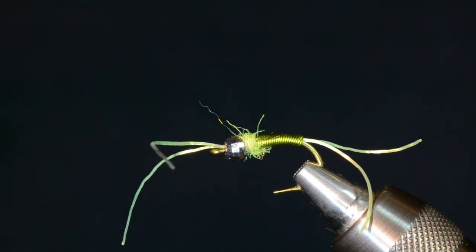Hey, how's it going? It's Andrew Grillos here. I'm going to show you guys how to tie my heavy metal worm today. It's a super effective worm that combines a rubber band worm and a wire worm, and I throw a tungsten bead in it for good measure. It's pretty quick, pretty easy to tie. Hope you enjoy it. All right, let's get into it.